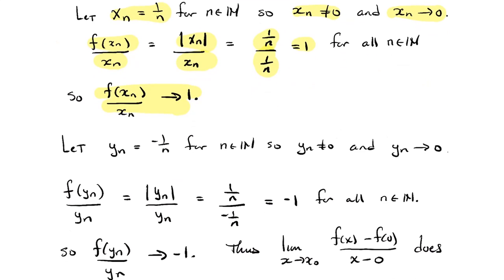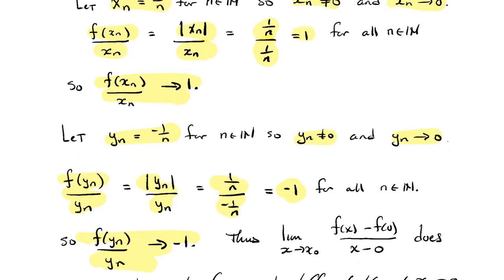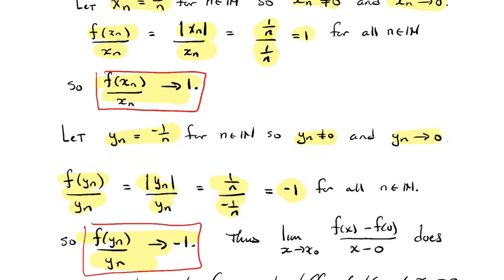On the flip side, if I look at another sequence converging to zero — yₙ = −1/n — it's never zero and converges to zero. The absolute value of yₙ is 1/n, but yₙ is −1/n, so that ratio is always negative one. So for this other sequence, the image sequence is converging to minus one. If you have two sequences that both converge to zero but whose image sequences don't have the same limit, our divergence criterion from Chapter 5 says that this limit doesn't exist.